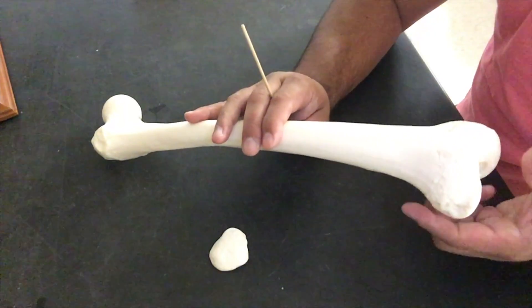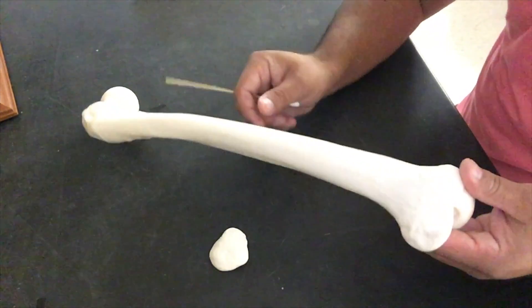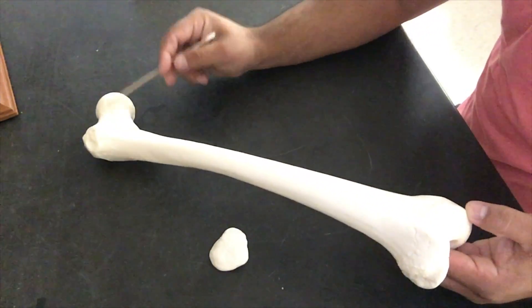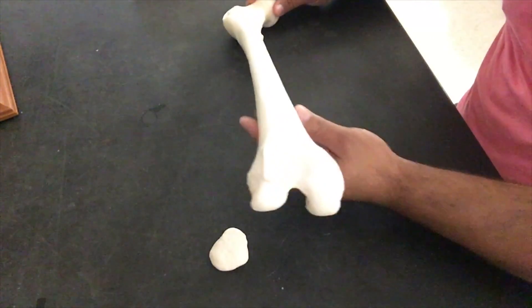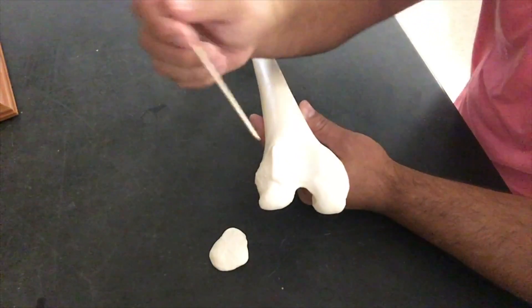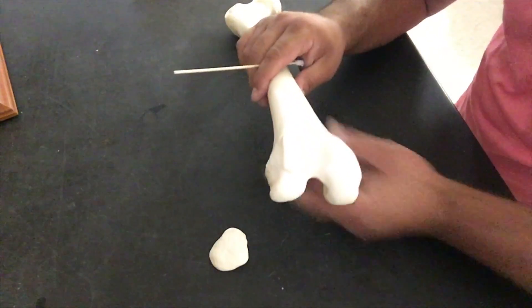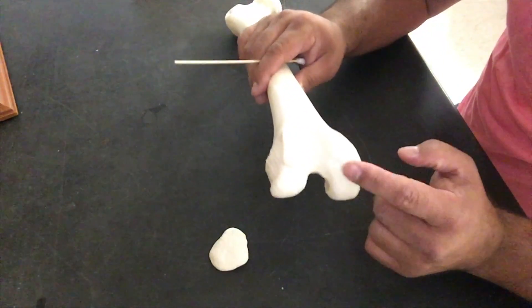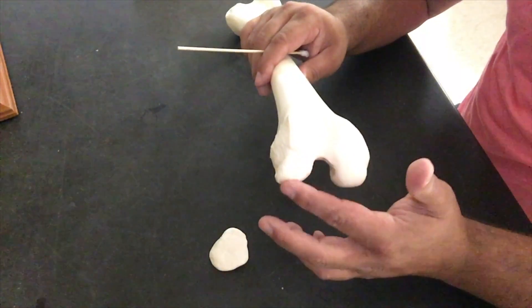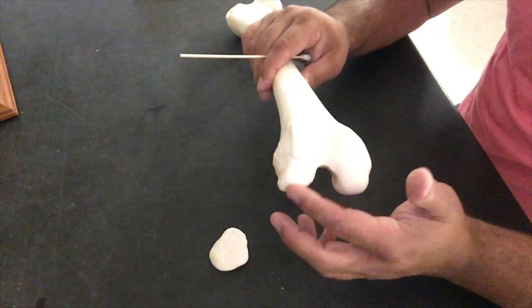These condyles are always going to face posterior, and we're going to name them based on direction terms. So since we know that this, I'm going to turn it this way so you can see a little bit better, that this is a right femur. We know directional term that this first condyle is going to be our medial condyle. Our outermost one is going to be called our lateral condyle.